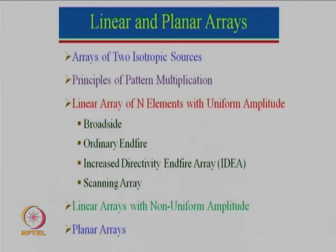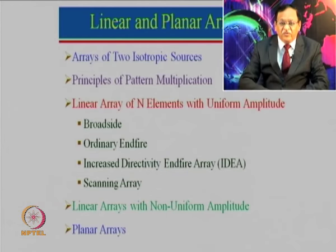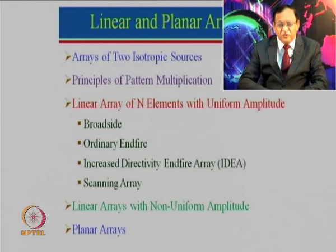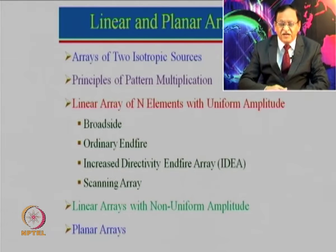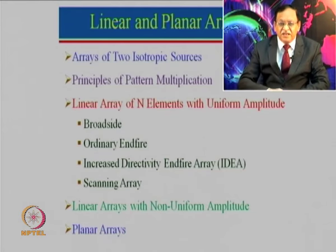Today we are going to discuss about various types of arrays. We will start with arrays of 2 isotropic sources — where we assume there are 2 isotropic elements. As mentioned earlier, there is no truly isotropic source, but for assumption we can use an isotropic source which radiates equally in all directions. We will consider various cases where they are fed with a certain amplitude, and we vary the phase to see how radiation takes place in different directions.